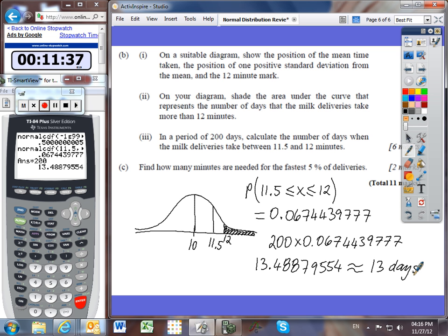Lastly, part C. Find how many minutes are needed for the fastest 5% of deliveries. The fastest 5%. So if we draw our diagram, the fastest 5%—fastest means those are the lowest times, right? Because it's quickly, it's taking less minutes. We're just looking for the lowest 5%. If we can just find this cutoff value, let's call it K.